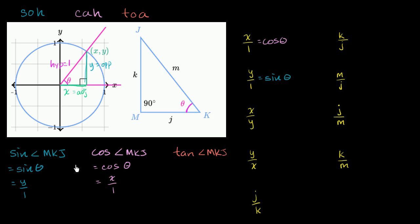For both of these, I used the SOH-CAH-TOA definition. But we could also use the unit circle definition. X over 1 is the same thing as x. The unit circle definition says this x — the x-coordinate of where the terminal side of this angle, this ray, intersects the unit circle — is by definition the cosine of this angle. And the y-coordinate is equal to the sine of this angle. We could have written this point as cosine of theta, sine of theta.